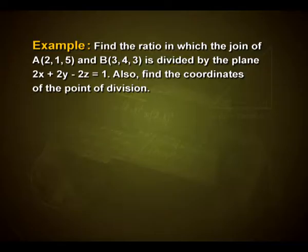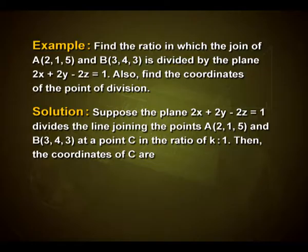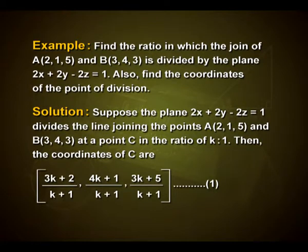Suppose the plane 2x + 2y − 2z = 1 divides the line joining the points A(2, 1, 5) and B(3, 4, 3) at a point C in the ratio k : 1. Then the coordinates of C are (3k+2)/(k+1), (4k+1)/(k+1), (3k+5)/(k+1). Take this as the first expression.